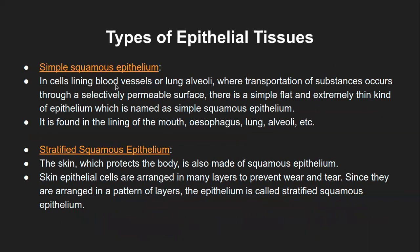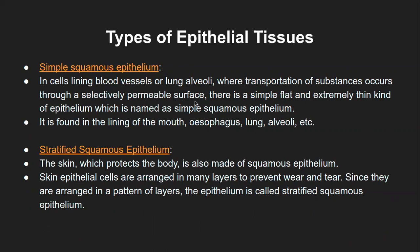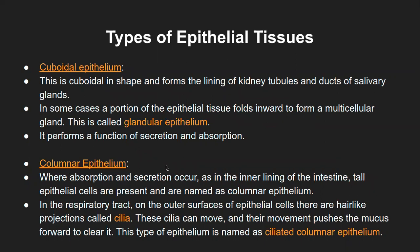To summarize the four types: simple squamous epithelium is present in blood vessels, lung alveoli, and also in the mouth. Stratified squamous epithelium is present in the skin. Cuboidal epithelium, which is also a glandular epithelium, is present in kidney tubules and ducts of salivary glands. The mouth also has simple squamous epithelium and cuboidal epithelium — when cuboidal, it performs the function of salivation specifically. Cuboidal epithelium relates to secretion; simple squamous epithelium allows permeability and transport. The columnar epithelium is present along the respiratory tract and intestine, with cilia-like structures. In the intestine, it has microvilli-like wave structures.